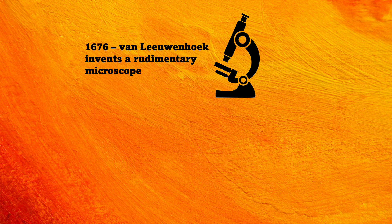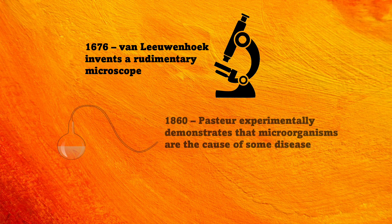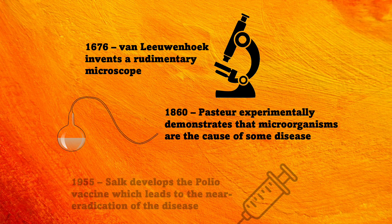In the mid-1600s, a series of scientific advancements set the way for the discovery of the microscopic roots of infectious disease. In 1676, van Leeuwenhoek invented a rudimentary microscope which allowed us to observe microbiology for the first time. In 1860, Pasteur experimentally demonstrated that microorganisms are the actual cause of some diseases. In 1955, Salk developed the polio vaccine, which led to the near eradication of the disease, and this event really set the stage for future inoculation efforts, including those for COVID-19.